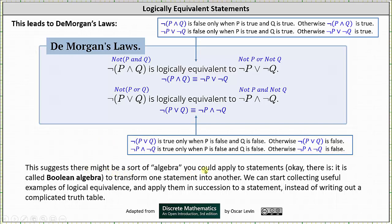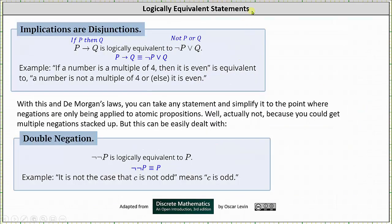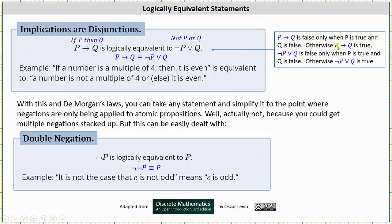This suggests there is a sort of algebra we can apply to statements to transform one into another — it is called Boolean algebra. We can collect useful logical equivalences and apply them in succession instead of constructing a complicated truth table. Two more equivalences: first, implication as disjunction — 'if p then q' is false only when p is true and q is false, and 'not p or q' is also false only when p is true and q is false, so they are equivalent. Second, the double negation rule: the double negation of p is logically equivalent to p.